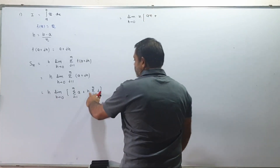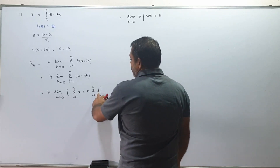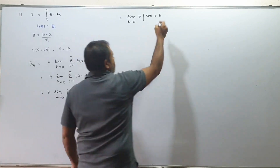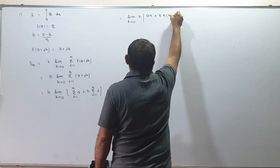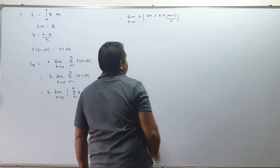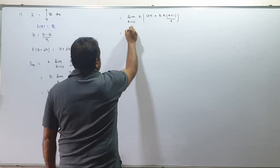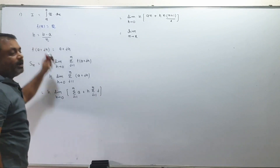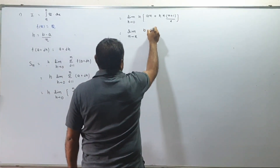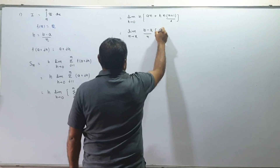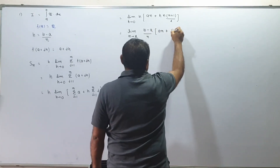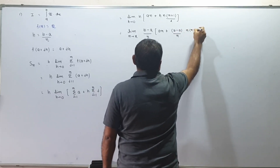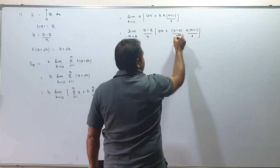Sigma of (a·n plus h). Using the alternative formula: sigma of i from 1 to n equals n(n+1)/2. So we get: h times [a·n plus h · n(n+1)/2]. Now h equals (b minus a)/n, and a can cancel.